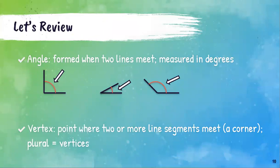We also have the term vertex. Vertex is the point where two or more line segments meet — think of it as the corner, the point. You also need to know that the plural of the word vertex is vertices. We don't say vertexes, we say vertices.